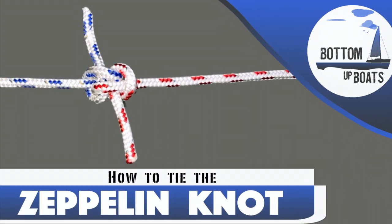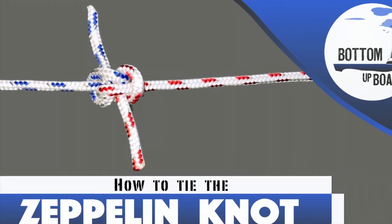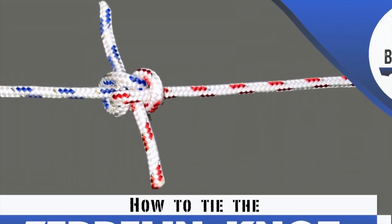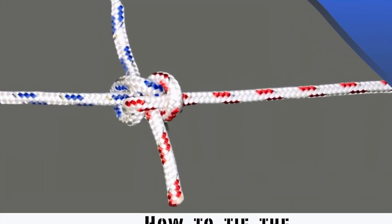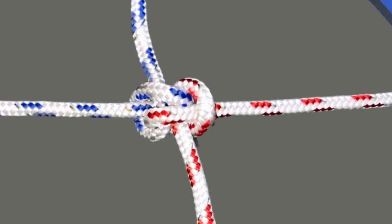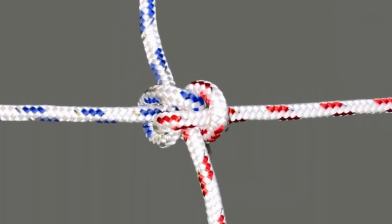G'day and welcome to today's Bottom Up Boats No Knots episode where we show you how to tie the zeppelin knot. This is a great knot for joining two pieces of rope with equal diameter. It's easy to untie even after extreme load is applied.